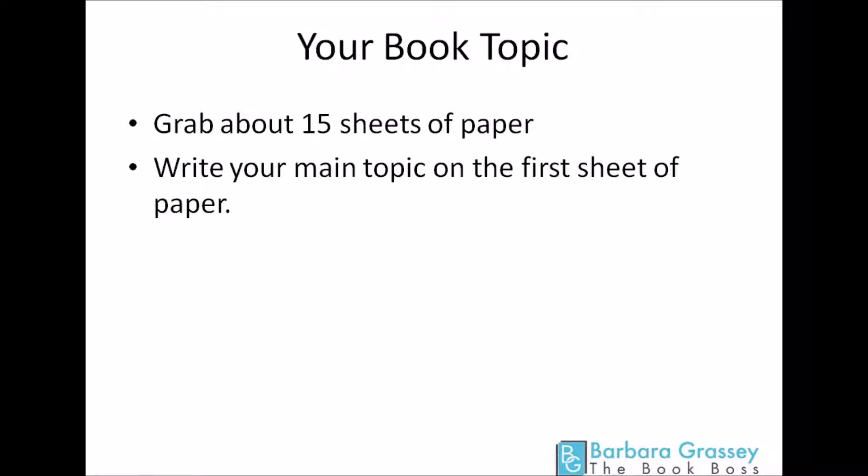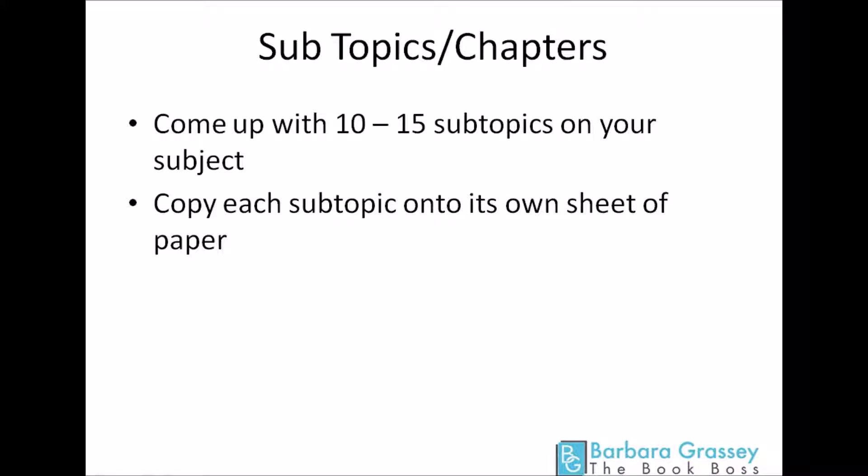Grab about 15 sheets of paper and write your main topic on the first sheet of paper. Then you're going to come up with 10 to 15 subtopics on your subject, and these are going to become your chapters. Copy each subtopic onto its own sheet of paper, and from time to time glance at your main topic and make sure the subtopics actually belong in that book. Sometimes we want to put everything we know into a book, and some of the material just doesn't belong in that particular book. So just check it against your main topic and make sure you're on track.